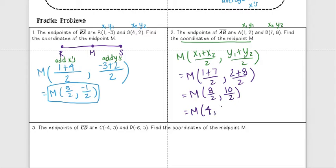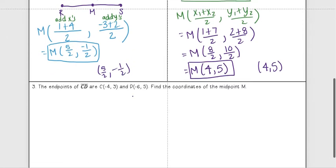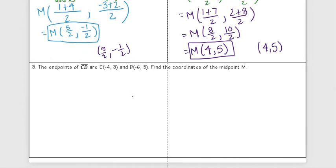And then 10 divided by 2 I get 5. So my answer here is M(4, 5). You don't have to put that M out in front, you could have also just put your answer as (4, 5). Here you could have put 5 halves and negative 1 half, either one's okay.